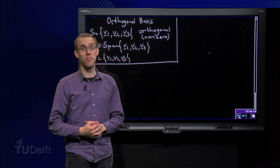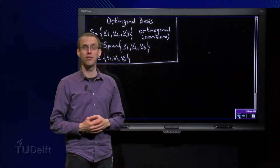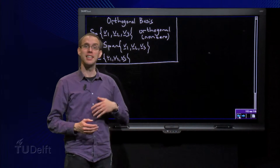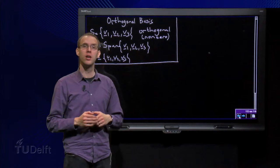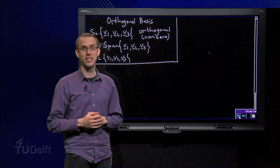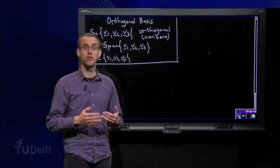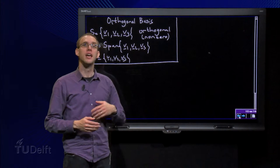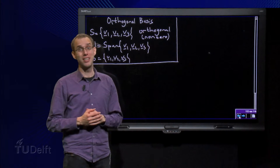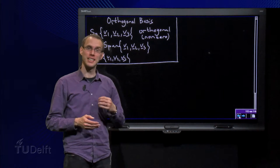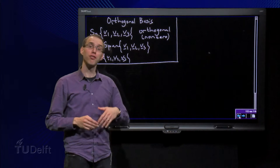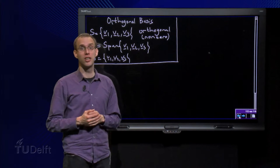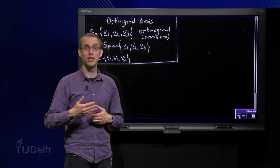As you remember, a basis for a subspace H is an independent set that spans H. Suppose S is the set containing the vectors v1 until vn. And suppose we define the subspace H as the span of these vectors of S. If you want to find a basis for H, we need to check whether S is independent or not.